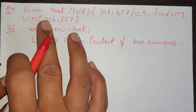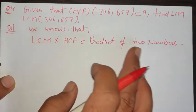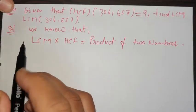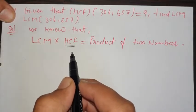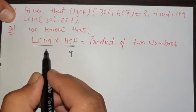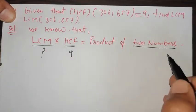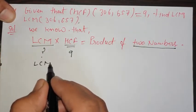We know that LCM multiplied by HCF is equal to the product of two numbers. So we have to calculate LCM. Simple way: HCF is given as 9. LCM we have to calculate, and both numbers are also known. Put: LCM × HCF = product of both numbers.